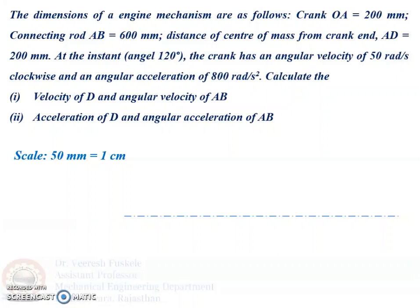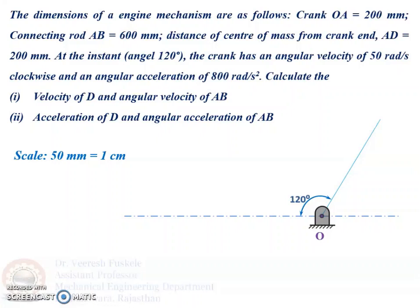On this center line, we take a point O at which the crank OA is hinged — this will also be the center of rotation of crank OA. At point O, we draw a line at an angle of 120 degrees. Since the crank is 200 mm, according to the scale, it will be represented by 4 cm. We take a length of 4 cm on the compass and cut that length on this line to get point A. So OA is the crank.